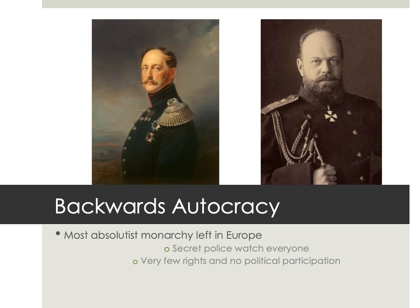He also attempted to make all of the various minorities living in the Russian Empire more Russian. One way he tried to do that was by forbidding them to speak any of their own languages — no more Polish, Finnish, Chechen, Ukrainian, Georgian. No minority languages were allowed; everybody had to learn Russian. He also started several pogroms against the Jewish people living in the Russian Empire. Pogroms are mass and systematic persecution targeting the Jewish people in the empire.